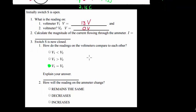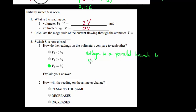If you need to explain your answer, you can say: the voltage across a parallel branch is equal to the voltage across the battery.